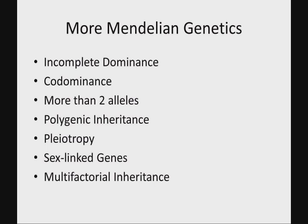The ones we're going to consider in this class include incomplete dominance, co-dominance, and when you have more than two alleles — because right now we're just looking at purple or white, green or yellow, but what if you have purple, white, blue, red to pick from? Also polygenic inheritance, pleiotropy, sex-linked genes, and multifactorial inheritance.